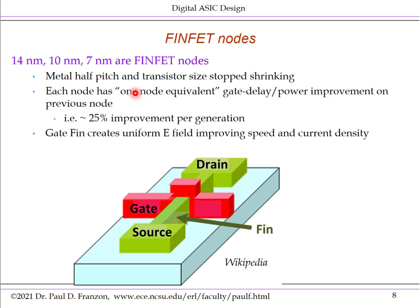So these nodes — 14, 10, 7, and so forth — have no feature that's actually at that dimension. Instead, they each represent one node equivalent of improvement in gate delay and power consumption over the previous node — roughly a 25% improvement per generation. For example, to introduce the 14nm node, the major fabs introduced FinFET geometries without shrinking the transistors or standard metal layers much, but achieved a 25% improvement over the 22nm node. The more advanced nodes coming down the track represent rate of improvement over earlier nodes, not a change in any physical geometry.